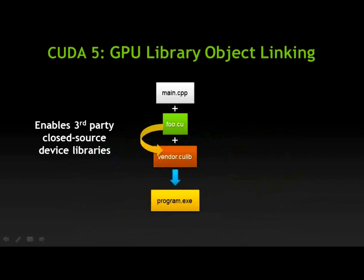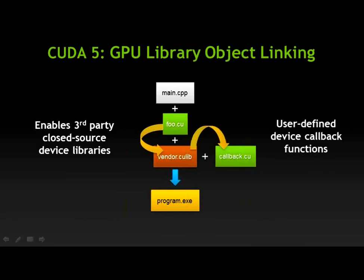The other benefit of GPU library object linking is that it enables third-party closed source device libraries to be shared between CUDA users and a vendor. In addition, linking can provide user-defined device callback functions that can work seamlessly with third-party vendor libraries, all callable on the GPU.